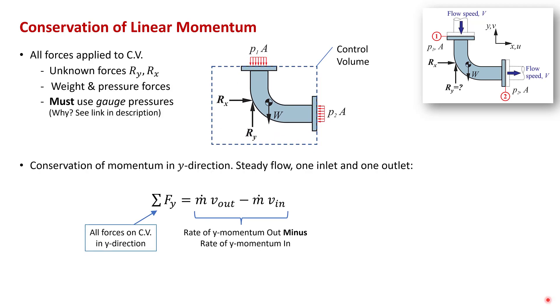The next step is to consider a control volume around the elbow. And we're interested in finding this force, ry, the force in the y direction required to hold the elbow in place. So we consider conservation of momentum in the y direction. And that states that the sum of the forces on the control volume equals the rate of y momentum out minus the rate of y momentum in.